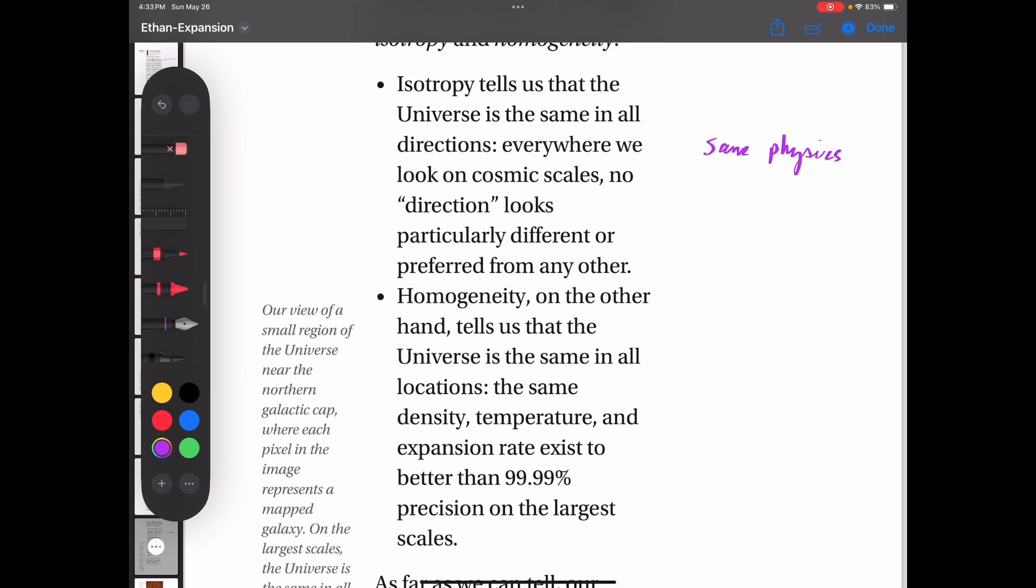Homogeneity, on the other hand, tells us that the universe is the same in all locations. The same density, temperature, and expansion rate exist to better than 99.9% precision on larger scales. Again, this is all the same physics. There's no reason it would be different. Every part of the universe is doing the same recycling process. And they go through it in different speeds. And overall, the whole thing just turns into a gigantic soup of point potentials in various forms and structures at various scales.